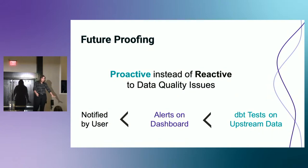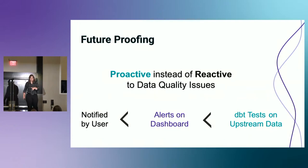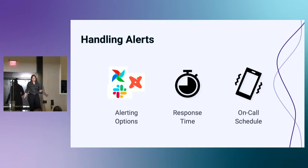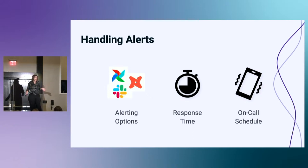Trying to be as proactive as possible instead of reactive to these data quality issues — rather than being notified by the user, a lot of analysts are putting alerts on dashboards. But an analytics engineer would take that one step further. They would say, I want to put tests in dbt — I want to get that upstream data to be checked on. Which brings up some analytics engineering things that an analyst probably has never had to think about: where do I want to get these alerts? Do I want them in Slack, Airflow, or dbt Cloud? What's my response time — if this goes off, do I need to wake up at 2 a.m. and fix it?